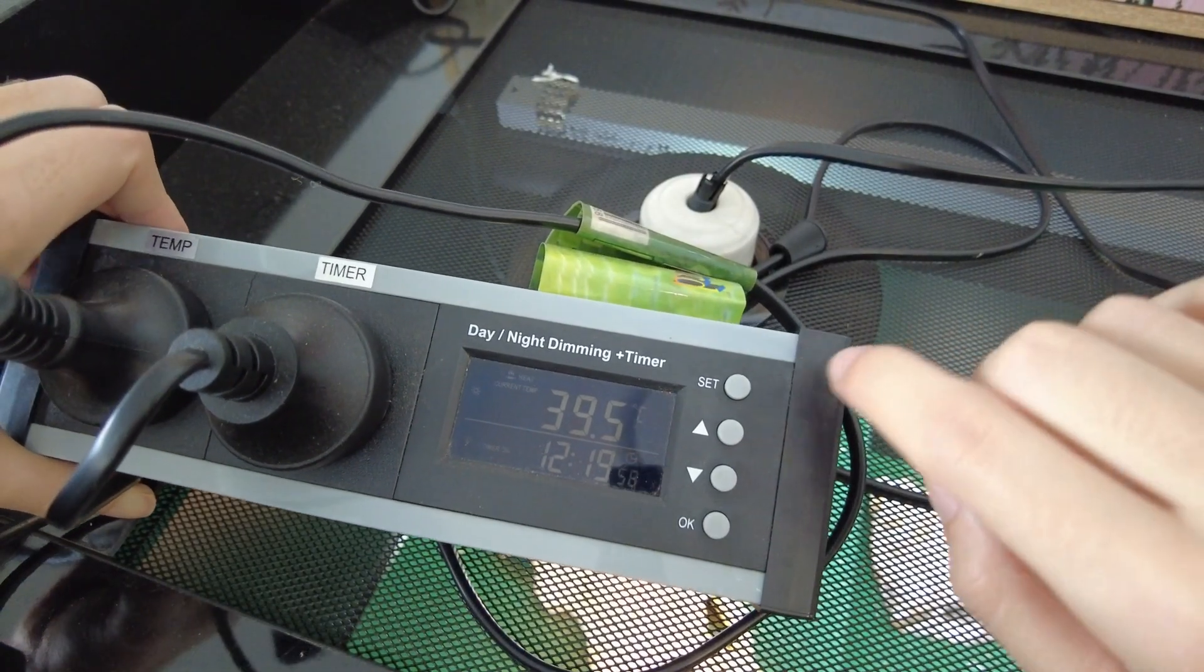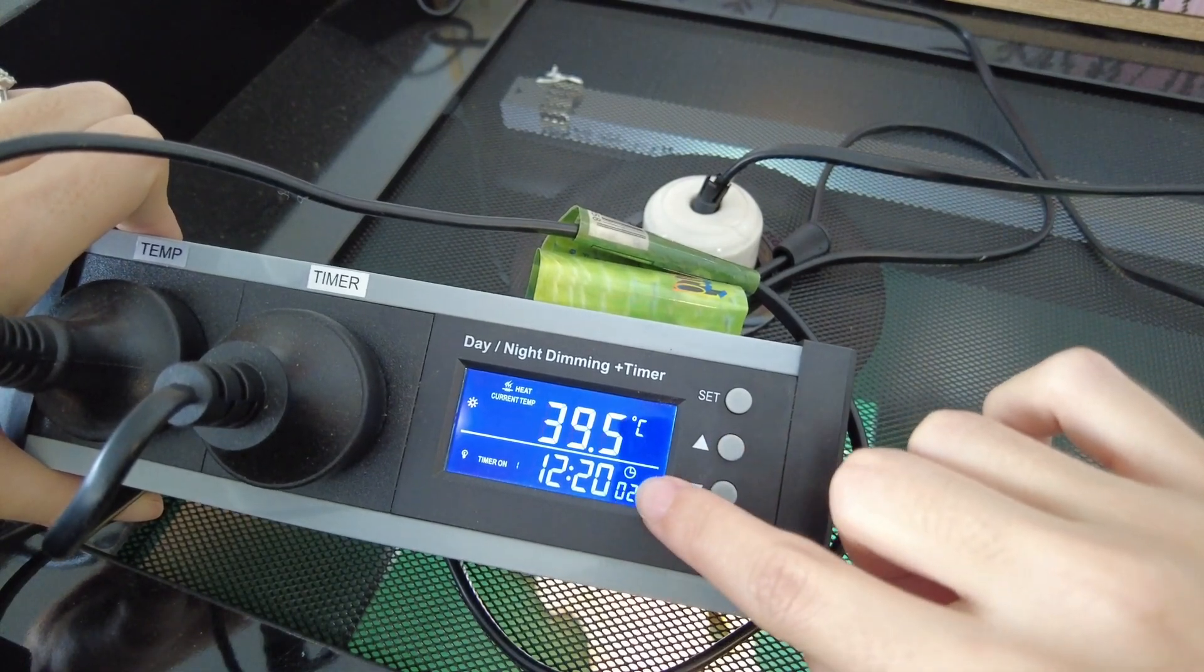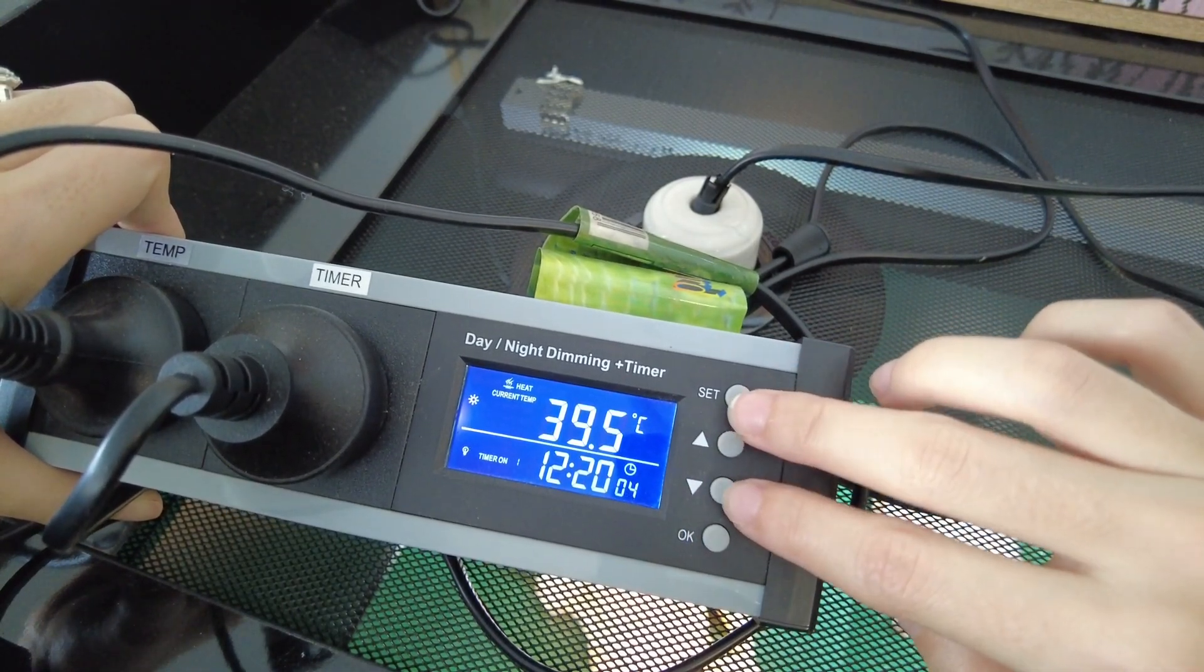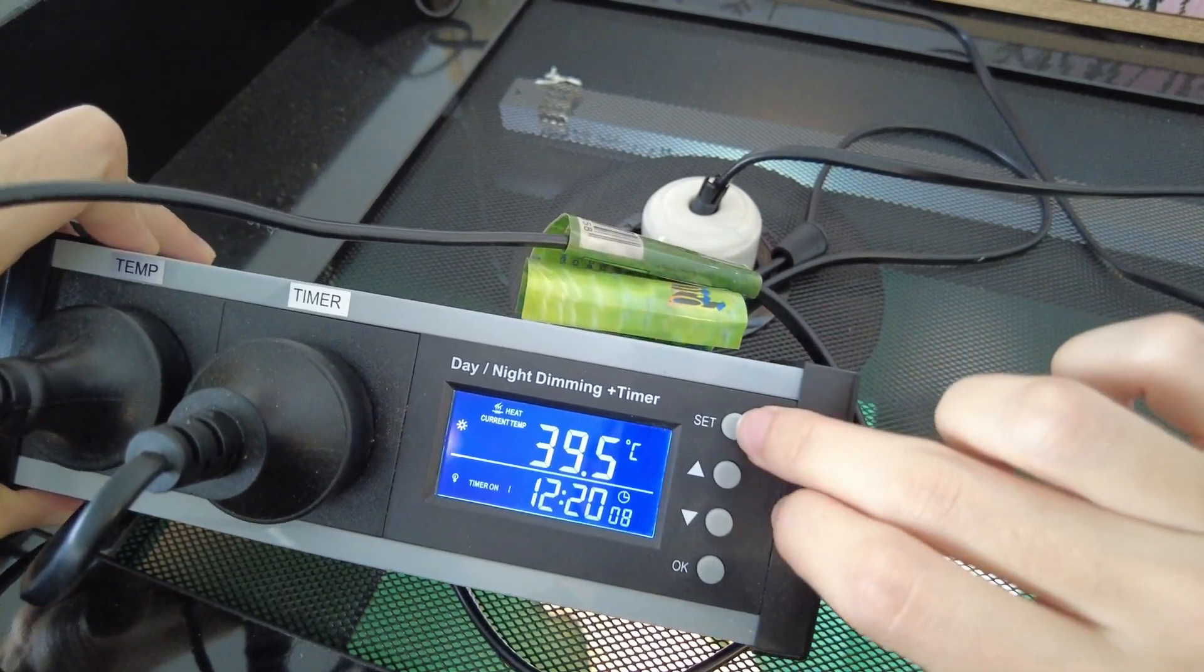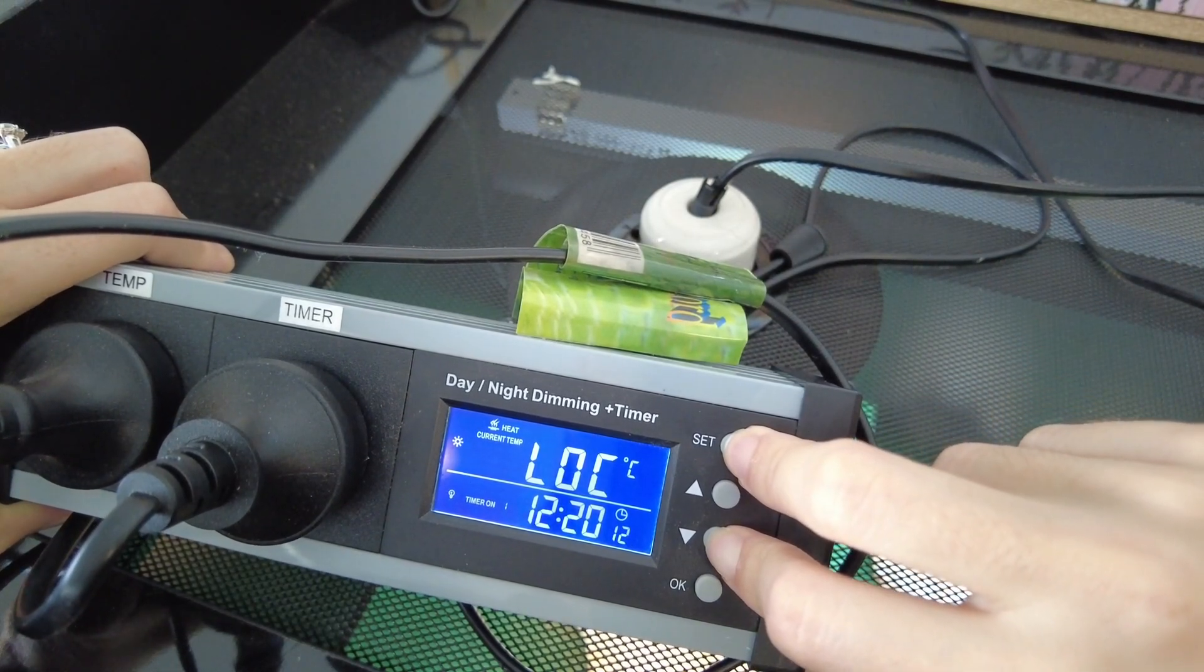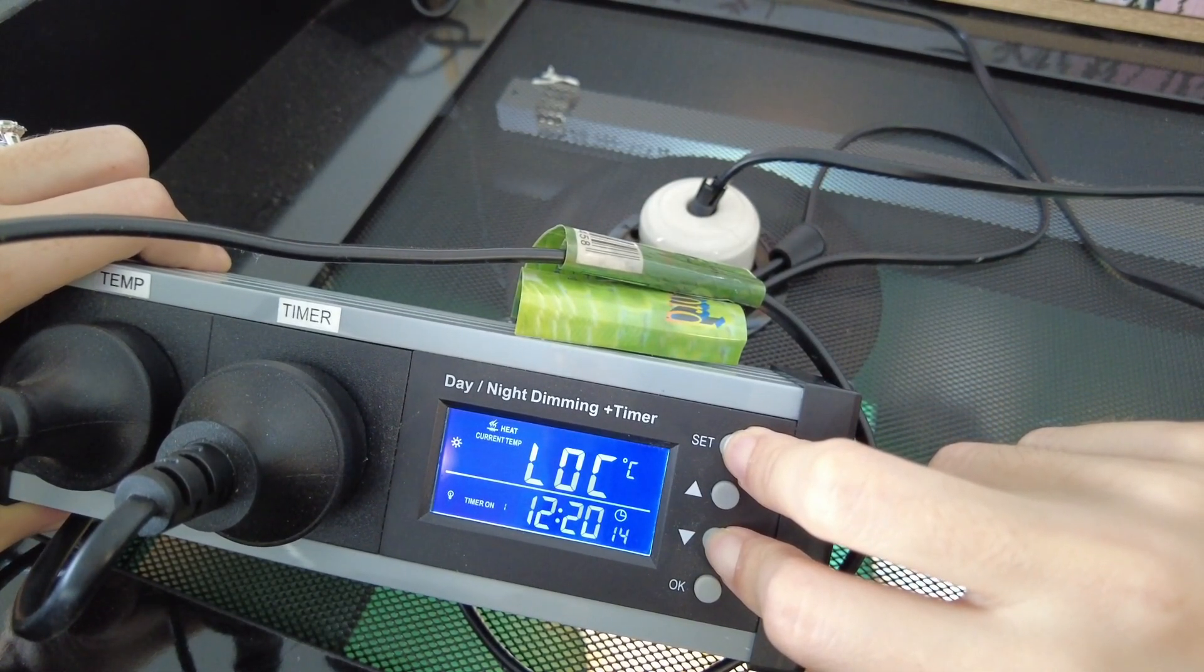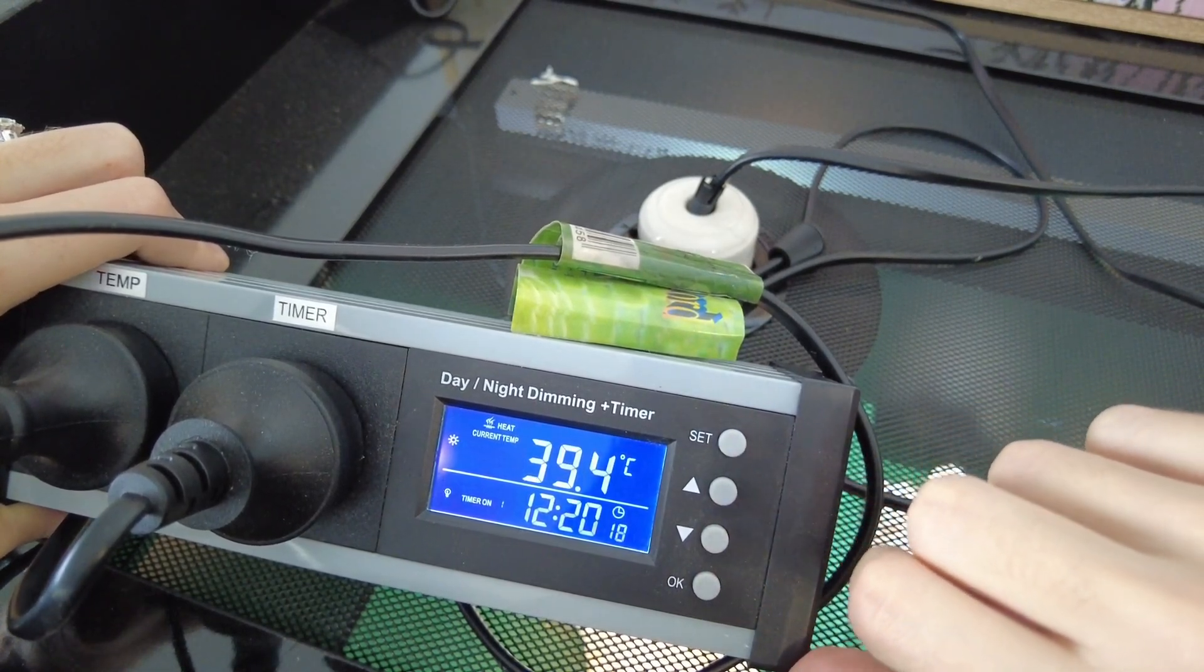Once you've got it all plugged in, if you press any of these buttons it's going to come up with this screen that says lock. So we need to unlock the device first to make changes to it. To do that we need to hold down the set key and the down arrow until that lock screen goes away. Okay, now we're going to be able to make changes.